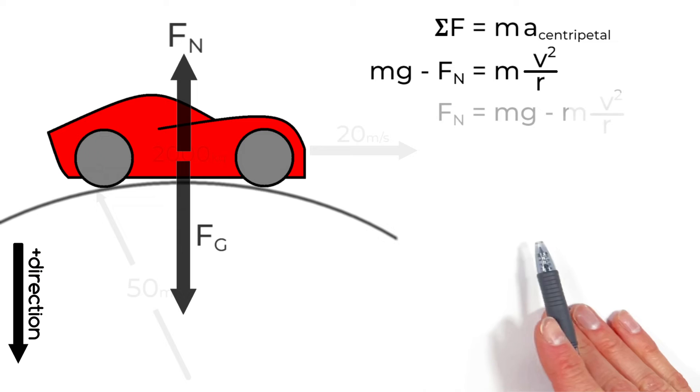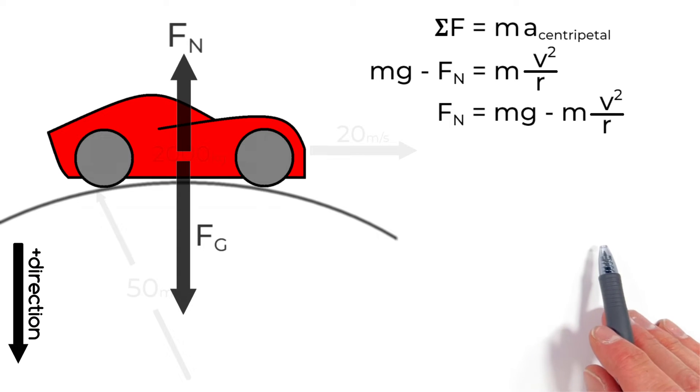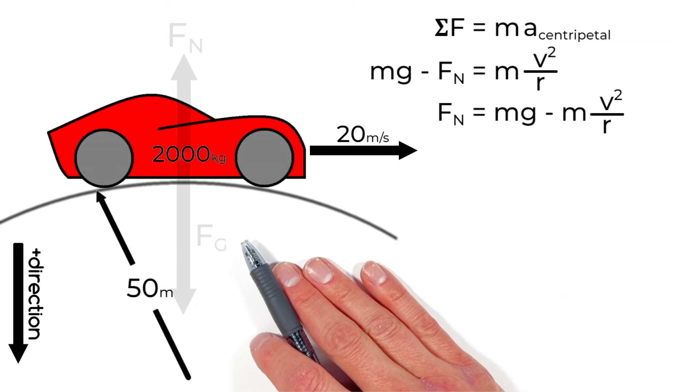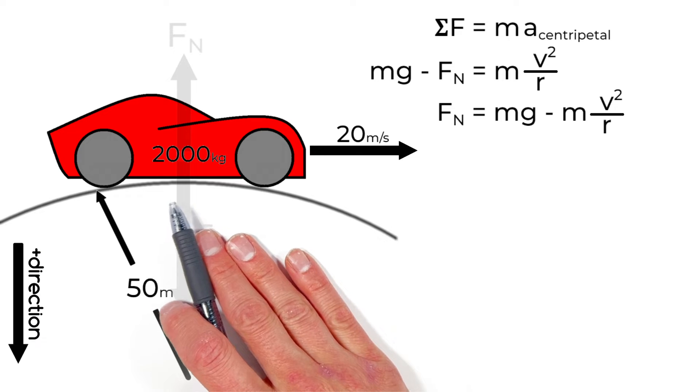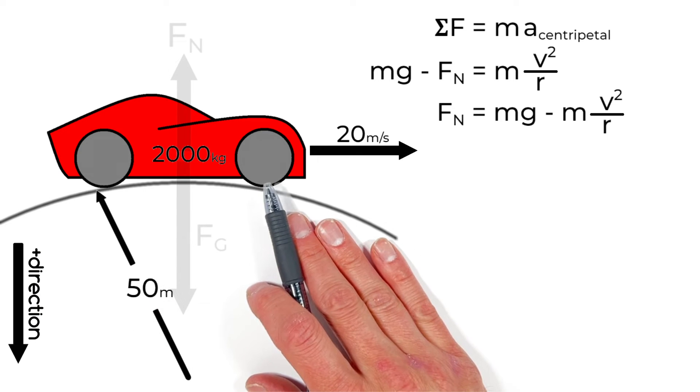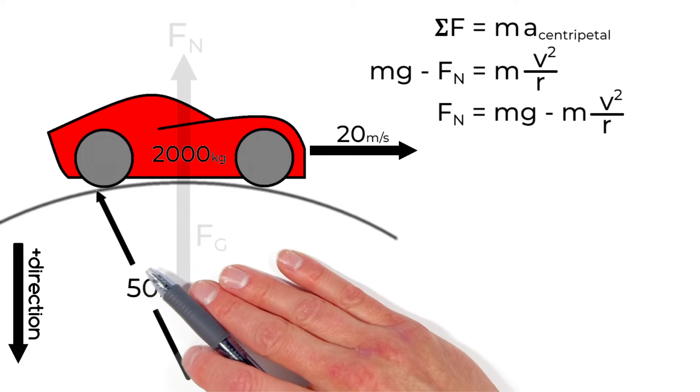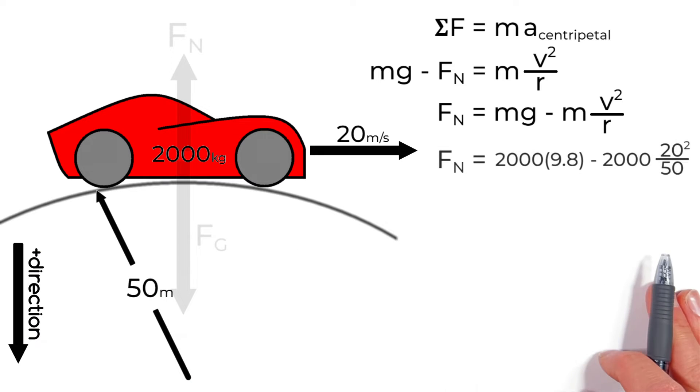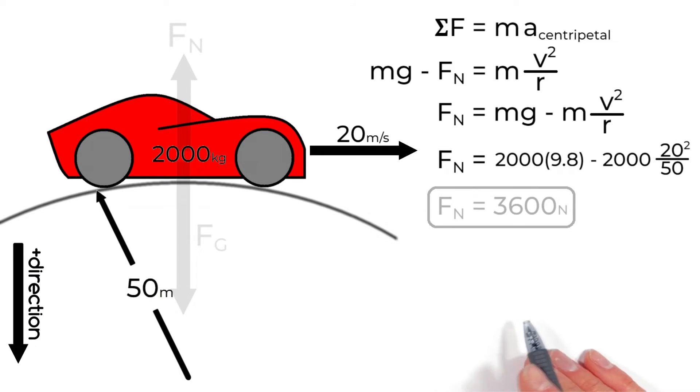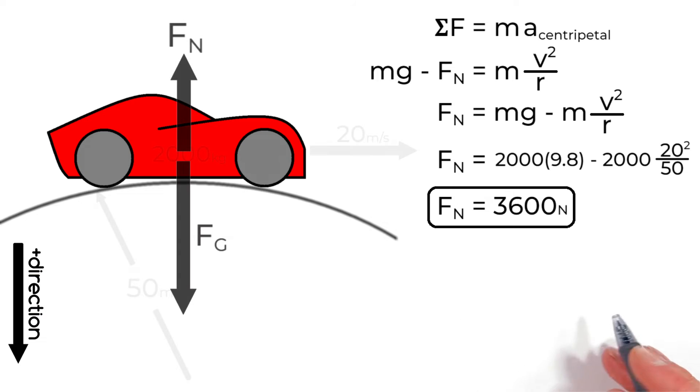Rearranging this equation for the normal force we can then plug in the numbers actually given in this problem. So we've got a 2,000 kilogram car moving along at 20 meters per second over a hill that's 50 meters in radius. So substituting in those numbers we find the normal force is 3600 newtons.